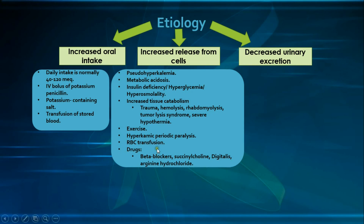Hyperkalemic periodic paralysis is an autosomal dominant disorder with very similar triggers to hypokalemic periodic paralysis — as described in the previous video — except that this one has hyperkalemia. Then we have RBC transfusion, which causes hyperkalemia because the RBCs have leaked their potassium to the outside during the storage phase.